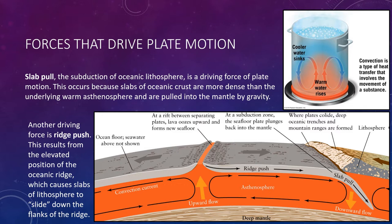Geophysical evidence confirms that although the mantle consists almost entirely of solid rock, it is hot and weak enough to exhibit a slow, fluid-like convective flow. The simplest type of convection is analogous to heating a pot of water on a stovetop. Heating the base of the pot warms the water, making it less dense and more buoyant, causing it to rise and spread out at the surface. As the surface layer cools, its density increases and the cooler water sinks back to the bottom, where it is reheated until it achieves enough buoyancy to rise again. Mantle convection is very similar to, but considerably more complex than, this model.